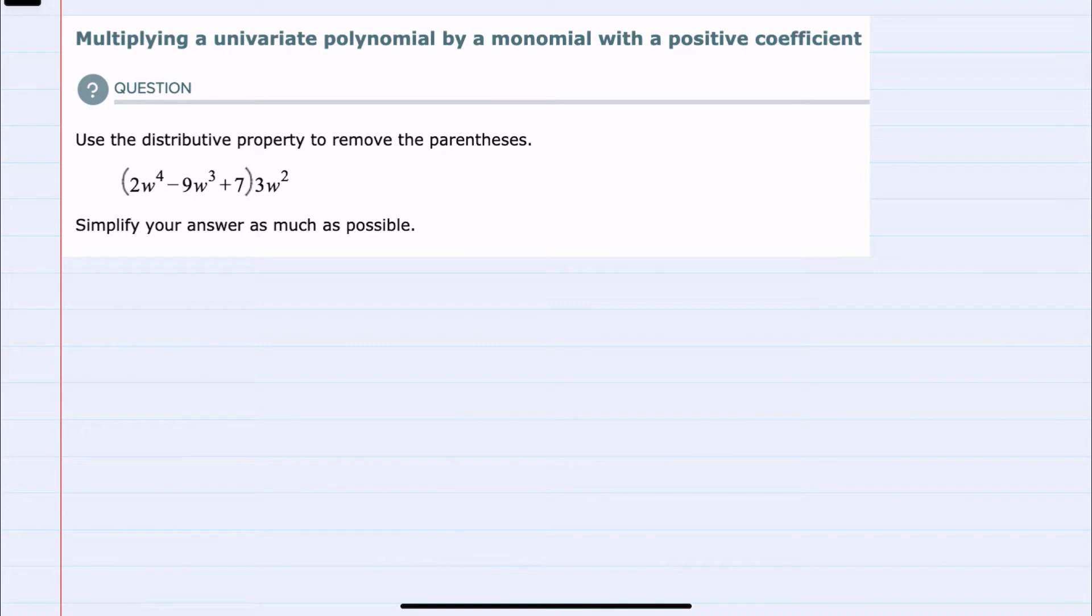So we're asked to use the distributive property to remove these parentheses and simplify our answer. The distributive property comes into play because I have three terms inside the parentheses, all of which are being multiplied by the single term outside the parentheses. To do that, I need to multiply each of those three terms by what's outside the parentheses.